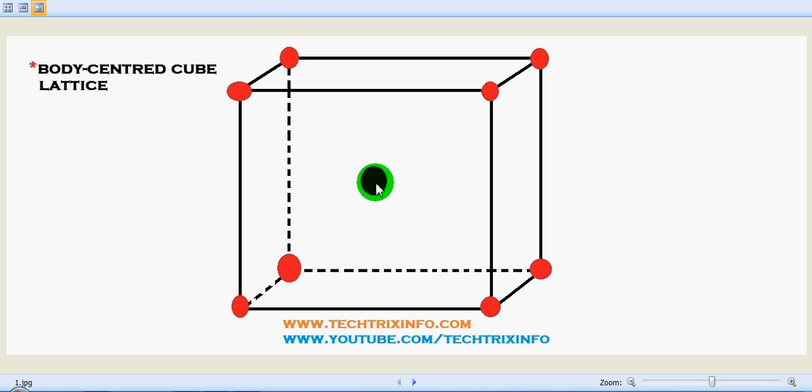So this arrangement is seen in the case of iron, the metal. So this is called a body centered cube lattice.